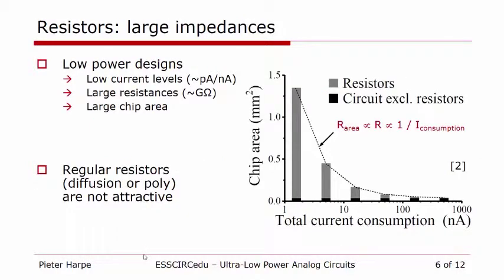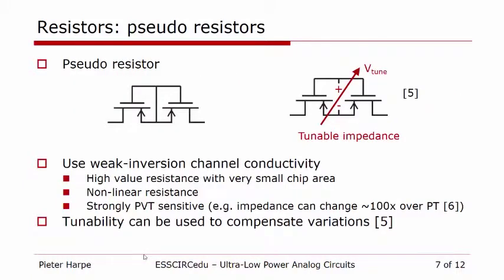Now let's move to resistors. If you design low-power and low-current circuits, it usually implies that you need to make resistors with a very high impedance in the order of gigaohms. If you do this with normal resistors like diffusion or polysilicon resistors, this will take a large chip area — you can see this in the example figure, where you scale a circuit from the microampere to the nanoampere range, and the resistors become much larger and take a very large area. To avoid that, one solution is to use pseudo resistors, where PMOS devices in a sub-threshold region are used as resistors. Because these transistors are almost off, there is only a very minor channel conductivity, and this means you can make a very high impedance resistance with a very small transistor.